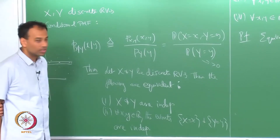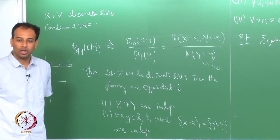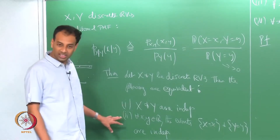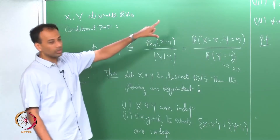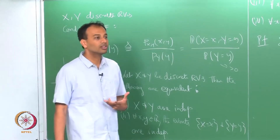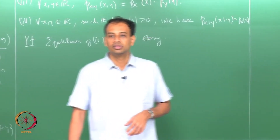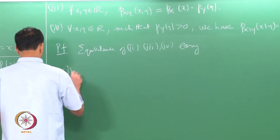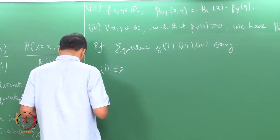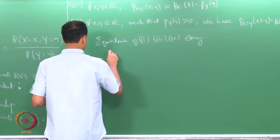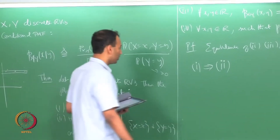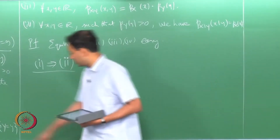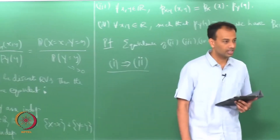So if you accept that 2, 3, and 4 are equivalent, what remains to prove is that 1 implies 2 and 2 implies 1. So, assuming that x and y are independent, you want to prove that these two events are independent.